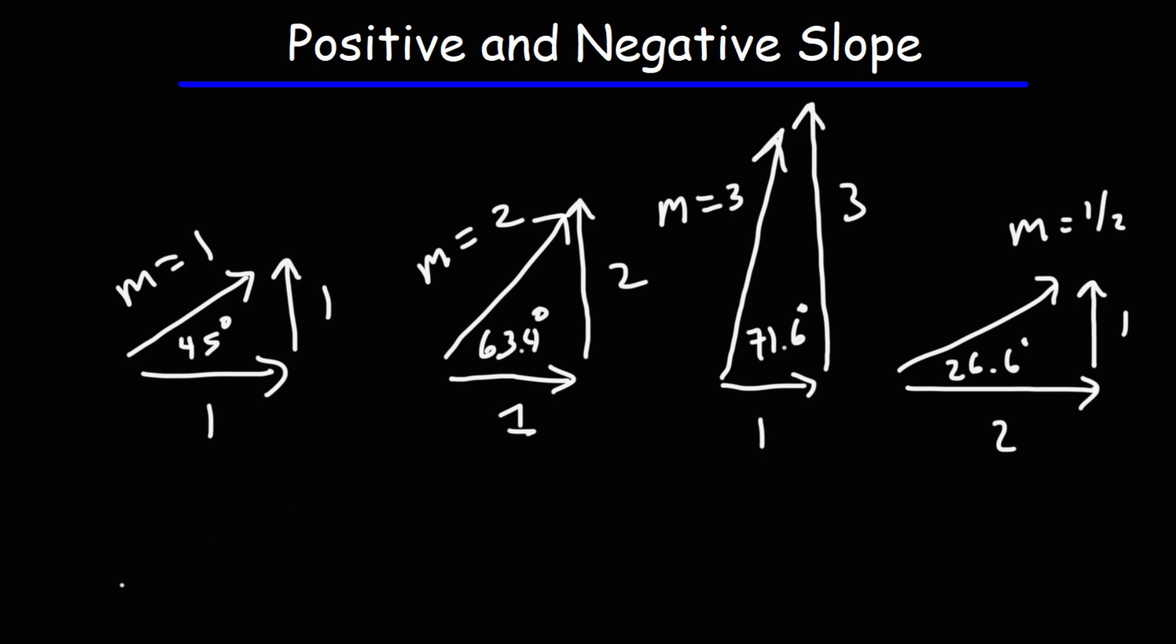So notice what happens. As the slope of a line increases, the steepness of that slope increases as well. So that's what it tells you. It tells you how steep the line is. Is it not so steep or is it very steep?